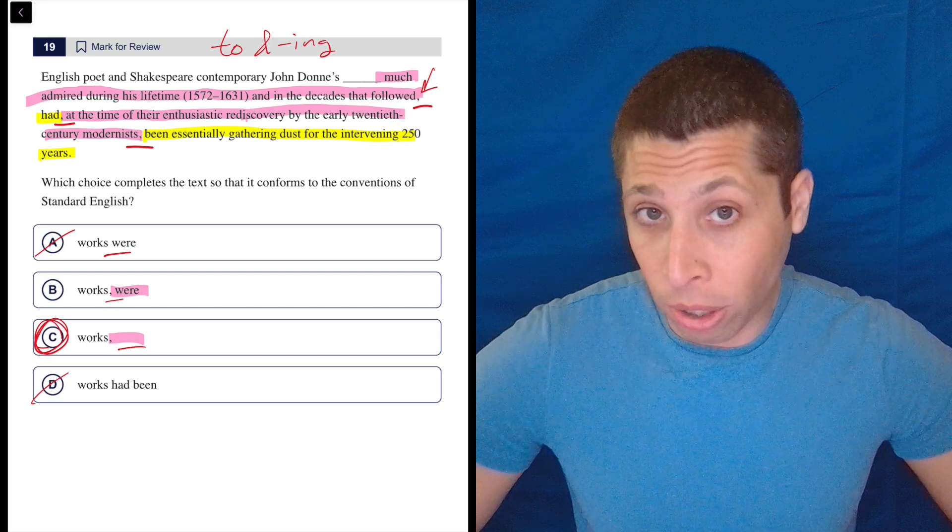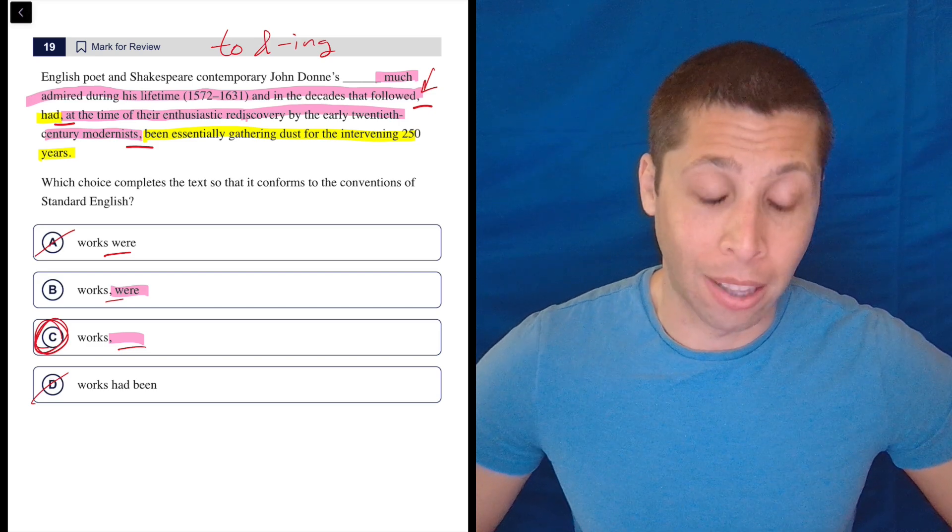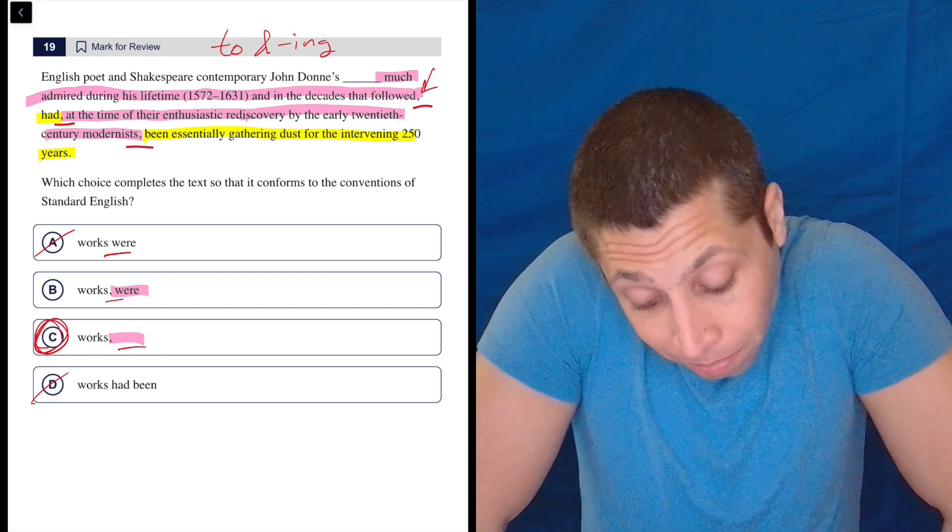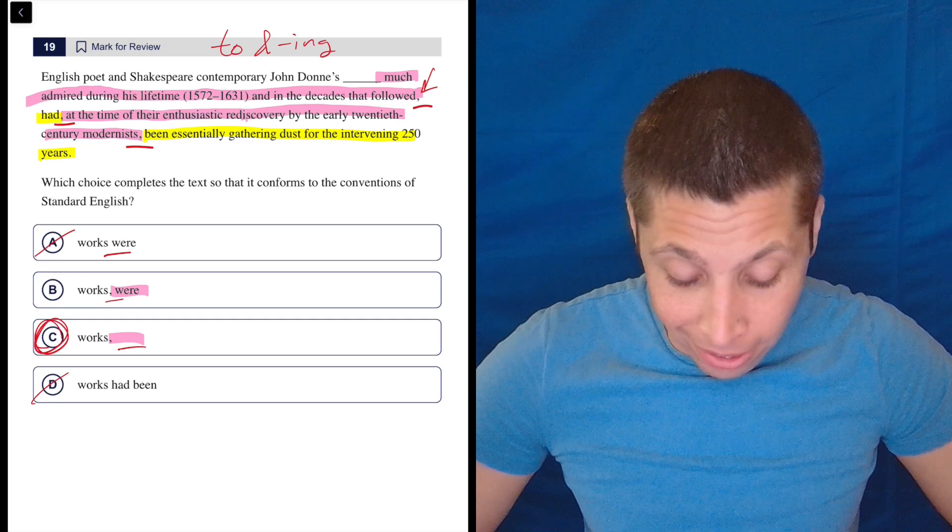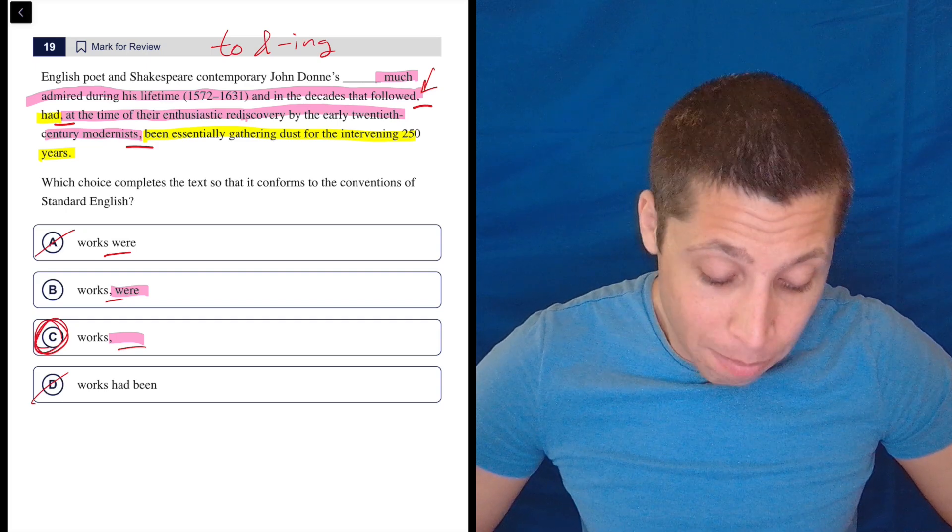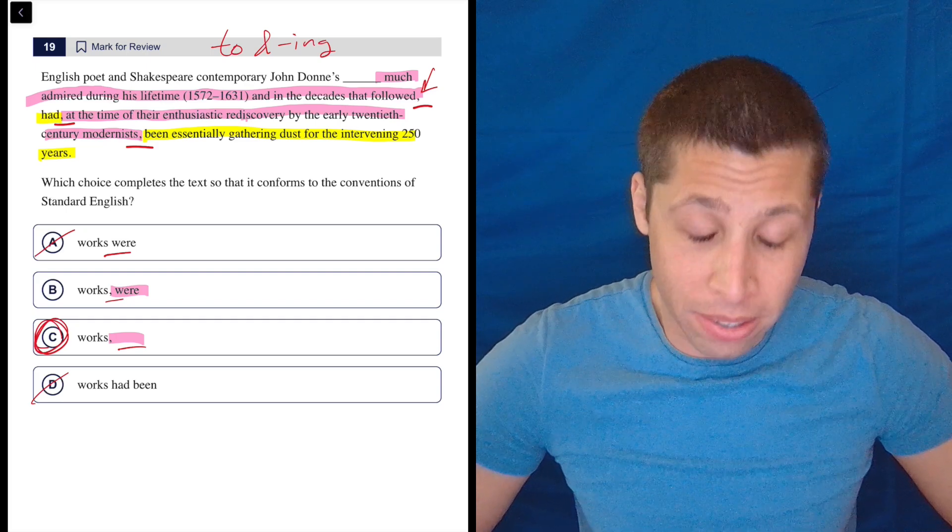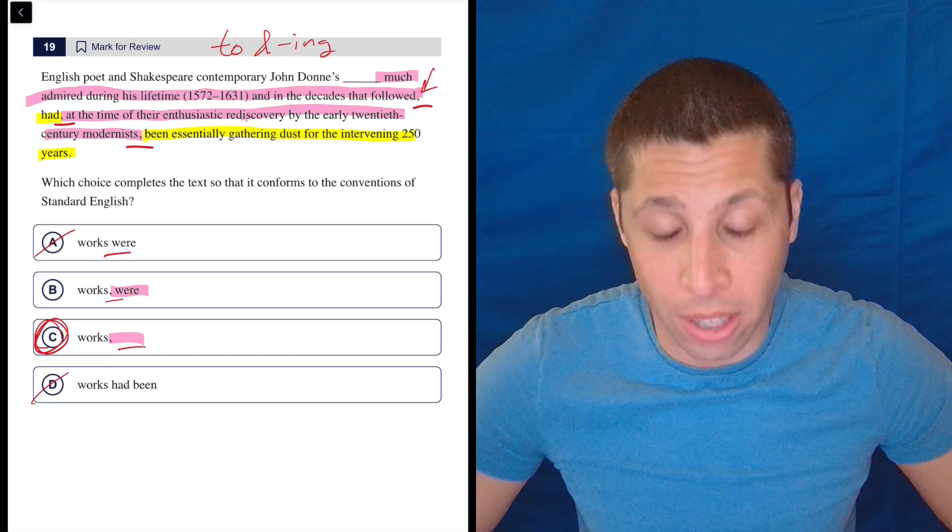And the only reason I know that is I continued reading and I thought about all these other commas. So this is really tricky. Like I said, I think like 98% of people are going to get this wrong, but it is what it is. It's still following the same basic rules, the same basic twists that we see on other to and ing questions.